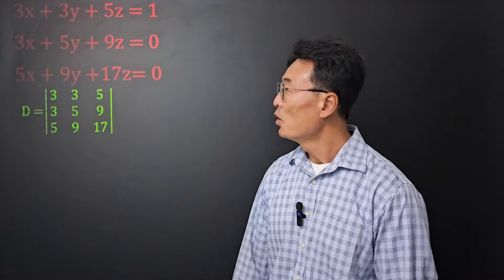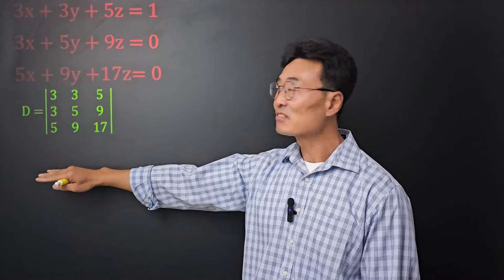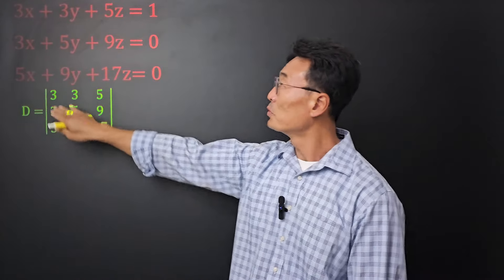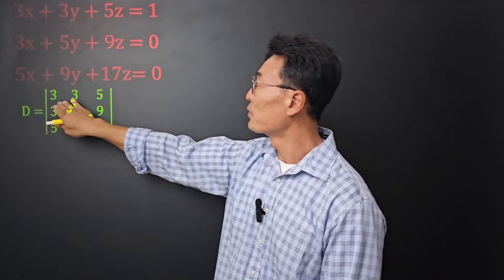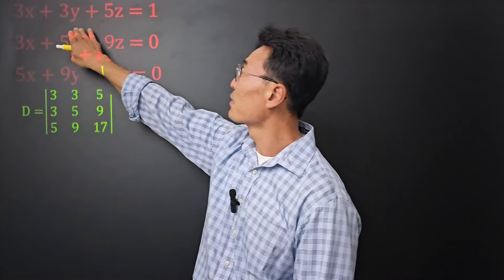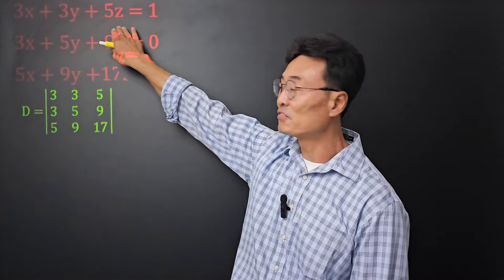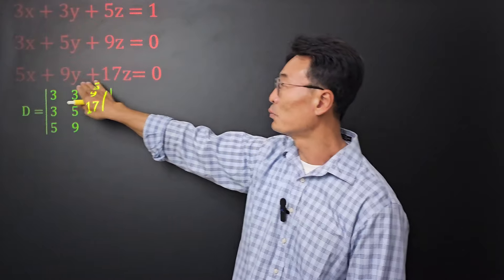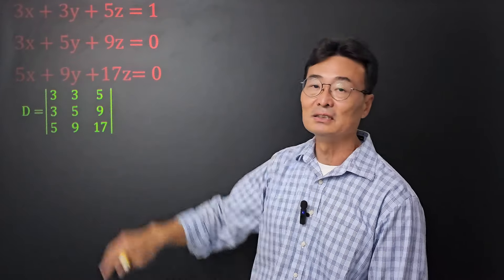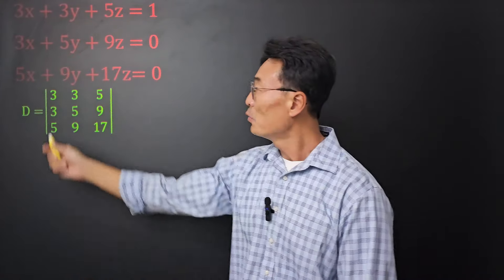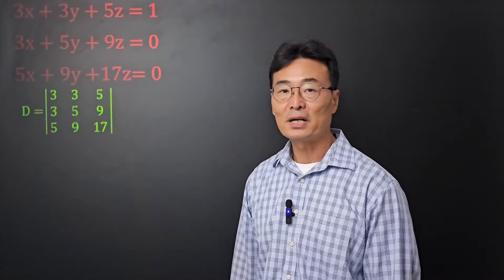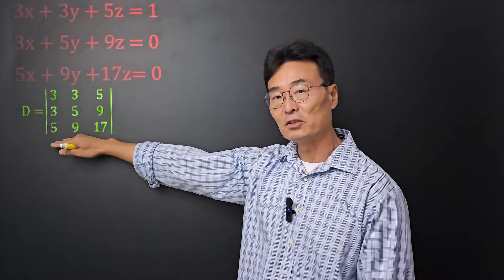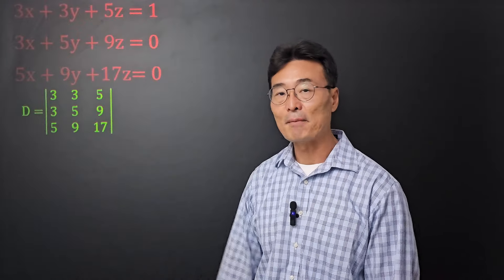First, we want to set up the matrix of the coefficients of the variables. We have the 3, 3, 5 from the 3x, 3y, and 5z, and the 5, 9, 17 from the 5x, 9y, and 17z. The bars on the left and the right mean we want to find the determinant of that matrix.